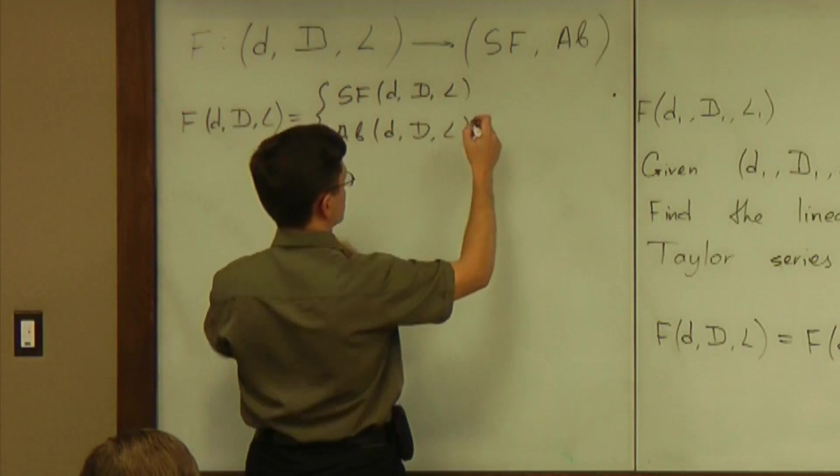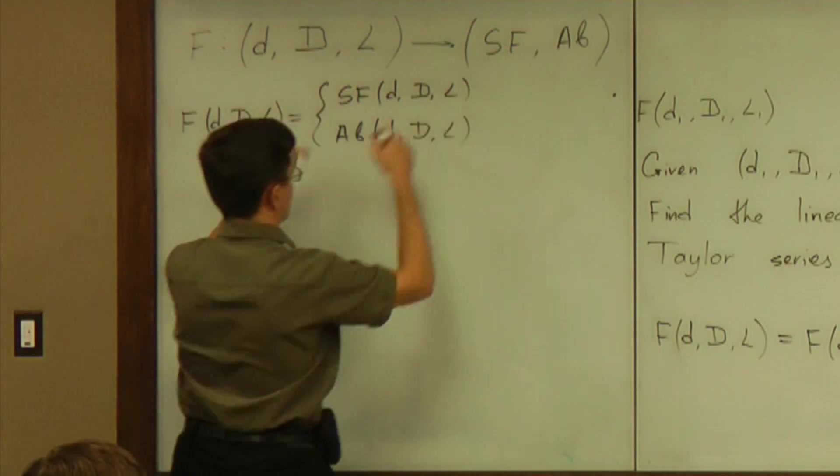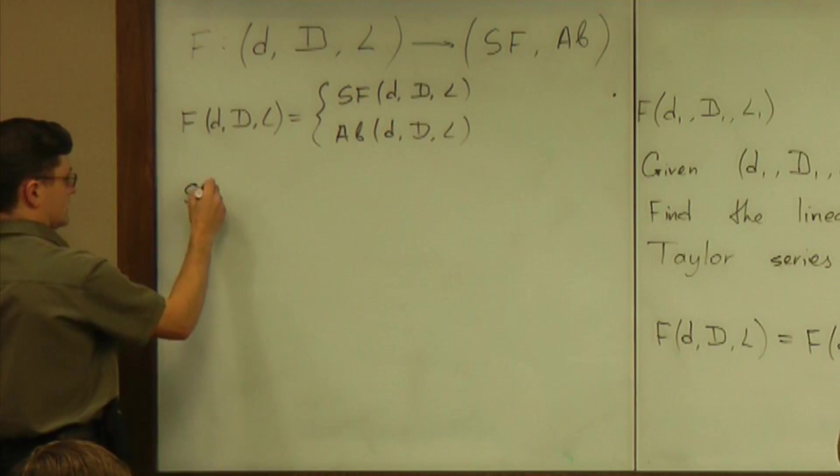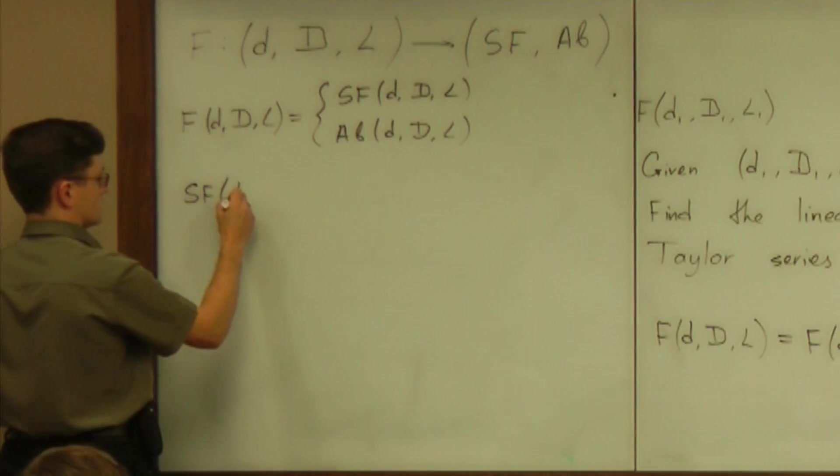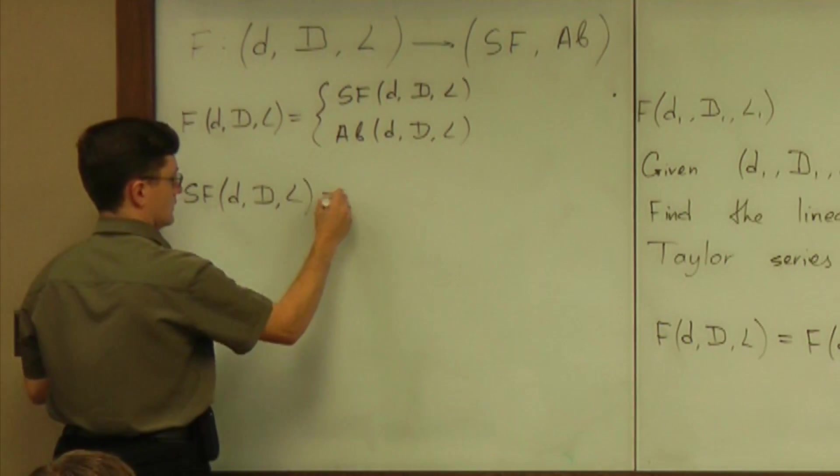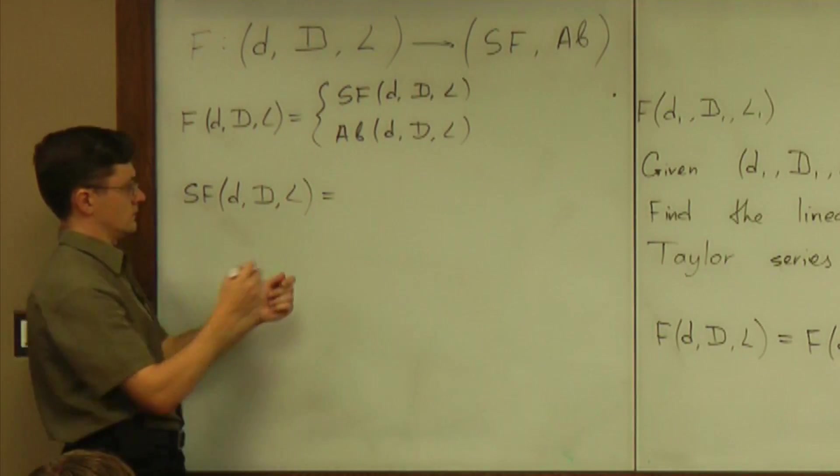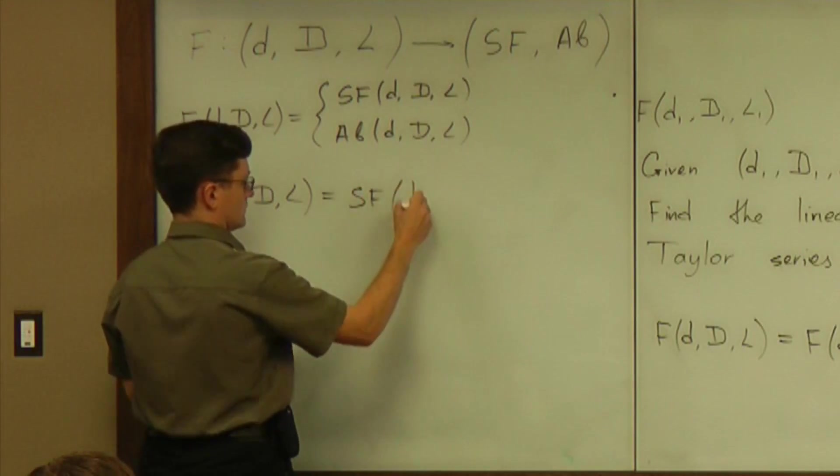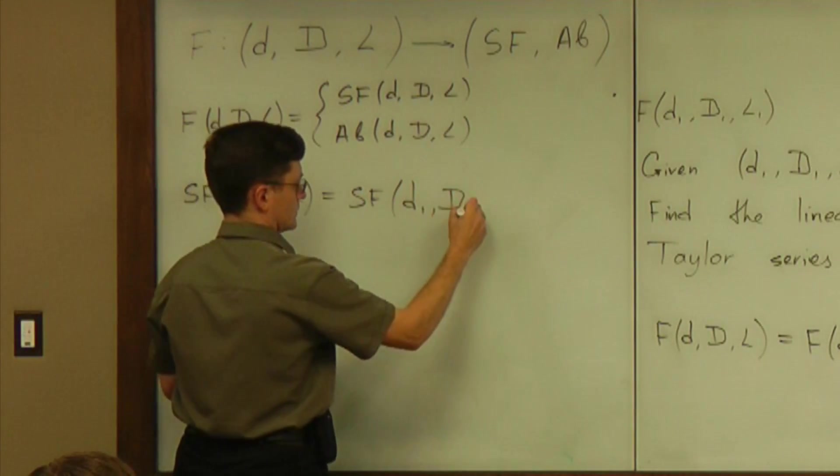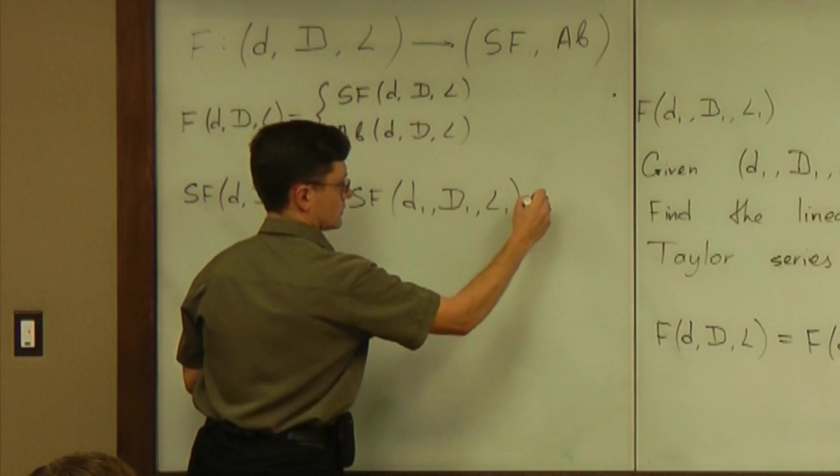Now can we think of a Taylor approximation for one of them? Let's say safety factor of D, capital D, L. Should be what? Safety factor of D1, capital D1, L1. The constant term.